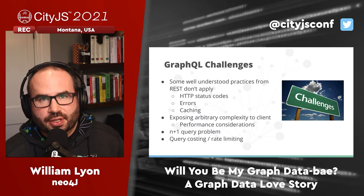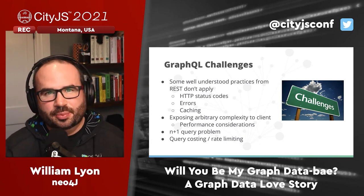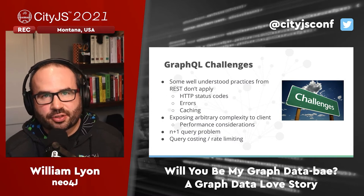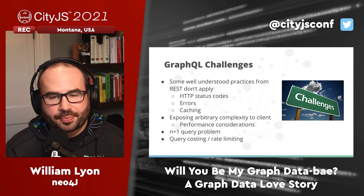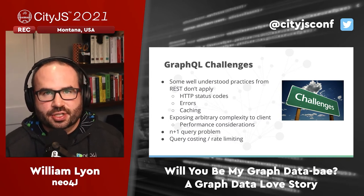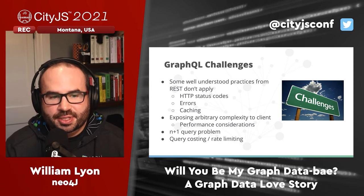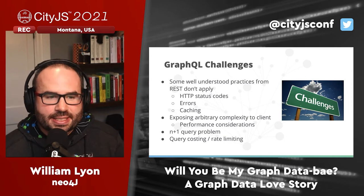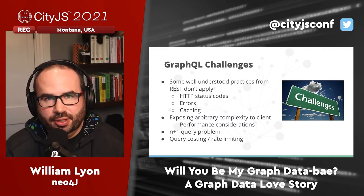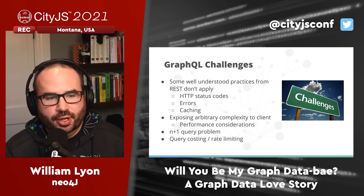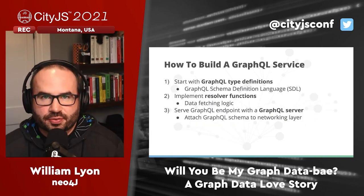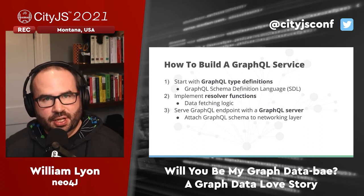Of course GraphQL is not a silver bullet. There are challenges that commonly come up when building GraphQL APIs, largely around things with well-understood best practices from the REST world that don't necessarily apply in the GraphQL world. There are tooling and best practices that address some of these issues. One thing that commonly comes up is the N+1 query problem, where we end up making multiple round trips to the data layer from our GraphQL API because of the nested structure of many GraphQL queries.